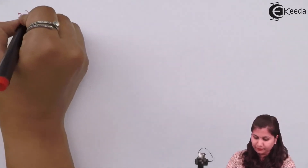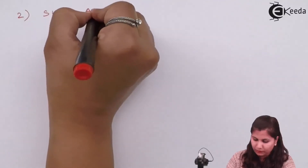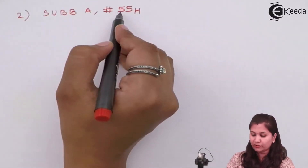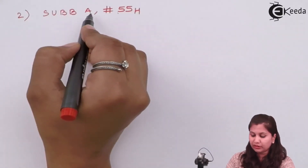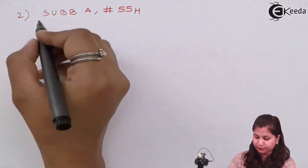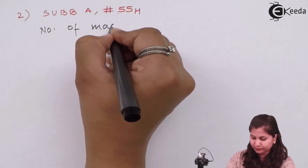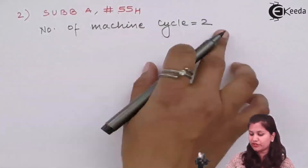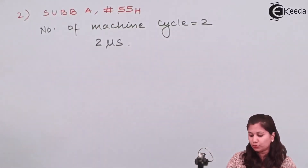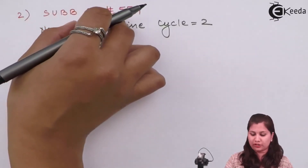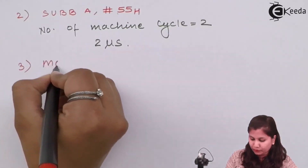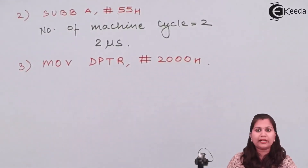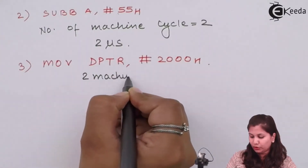The next instruction involves an 8-bit immediate data value that is subtracted from the accumulator along with the carry. The number of machine cycles required is 2, so 2 machine cycles × 1 microsecond = 2 microseconds total execution time. The next instruction is MOV DPTR with a 16-bit number, which also requires 2 machine cycles, giving 2 microseconds.